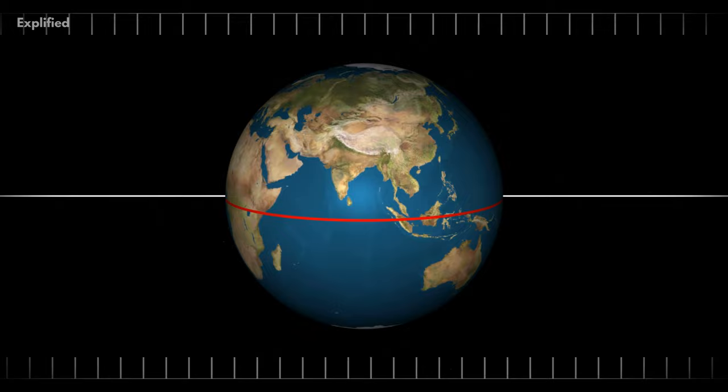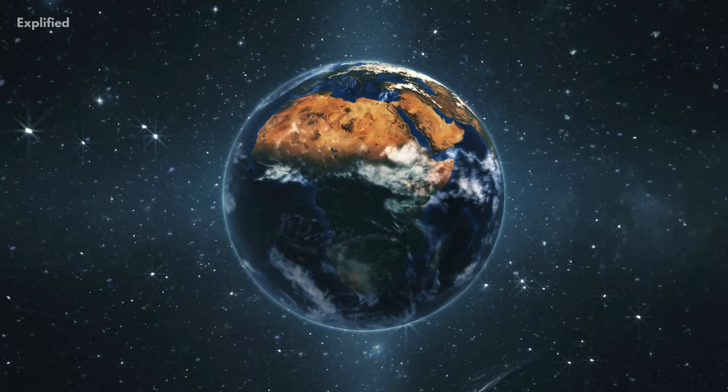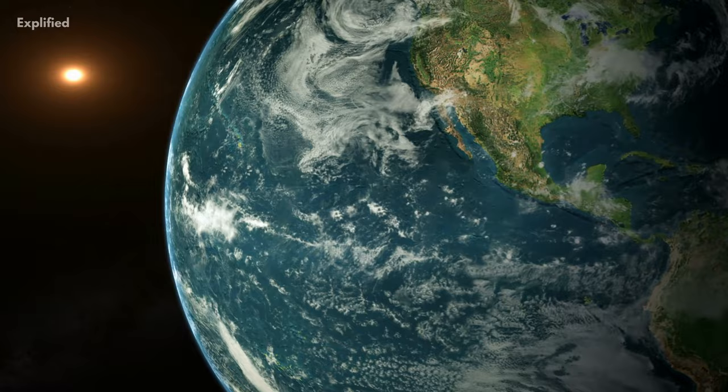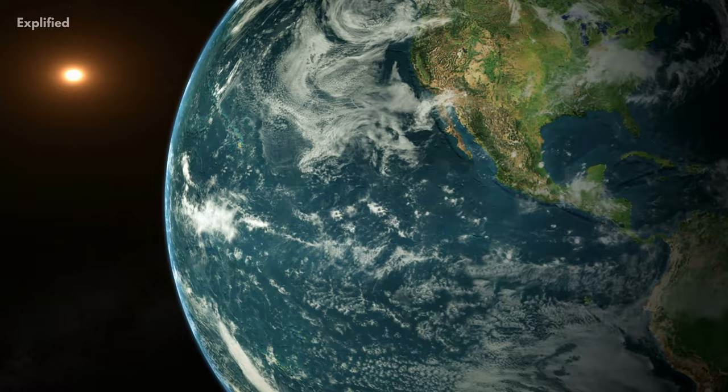At the equator, a circle around the entire circumference of the Earth would be covered in 24 hours. But, a shorter distance will be covered during these 24 hours when you shift towards the poles. This indicates that even though everything on Earth takes 24 hours to cover a rotation, objects at the equator will move faster than objects closer to the poles.